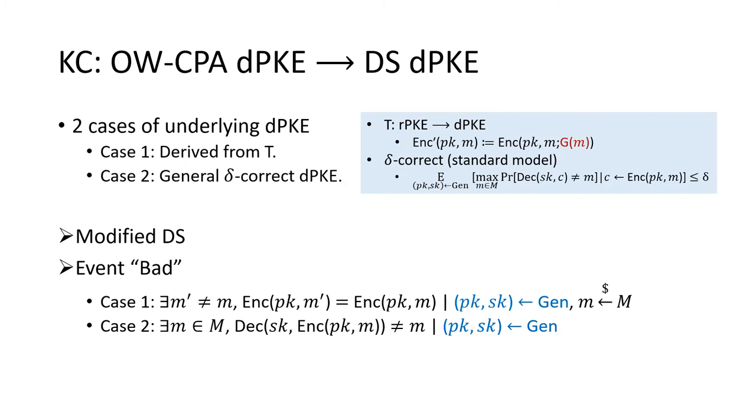Recall that the transformation T turns a randomized PKE into a deterministic PKE by assigning a hash function to the encryption randomness. The hash function is modeled as a random oracle in the proof.